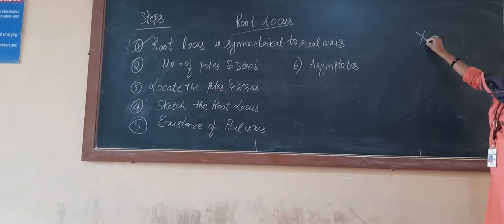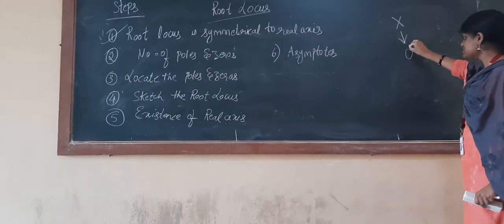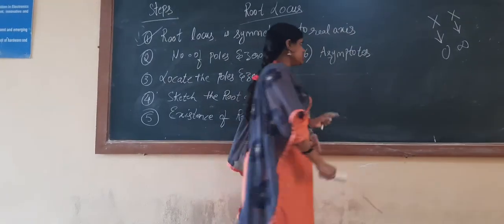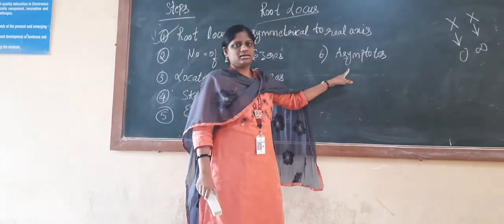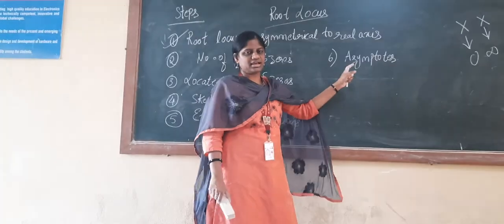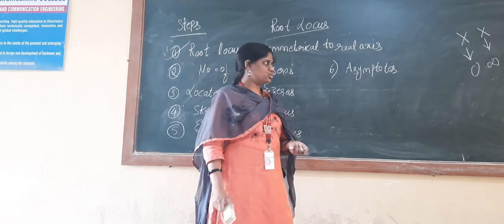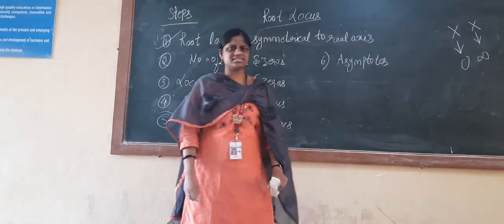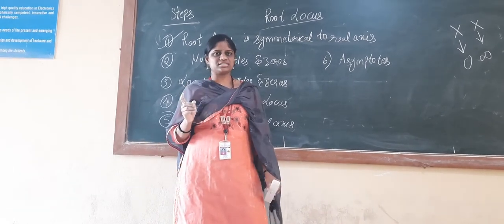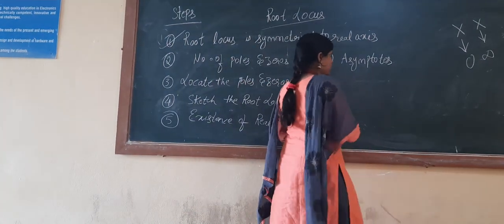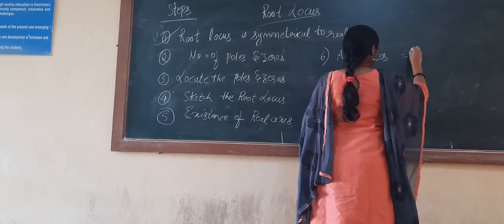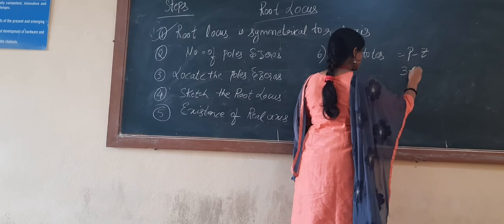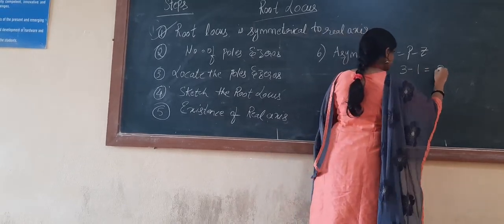Why do we need asymptotes? Sometimes the root locus starts at a pole but does not end at a finite zero, because there are more poles than zeros. In that case, the root locus goes to infinity, and the asymptote guides the direction toward infinity. The number of asymptotes equals P minus Z, that is, the number of poles minus the number of zeros. For example, if there are 3 poles and 1 zero, you need to draw 2 asymptotes.